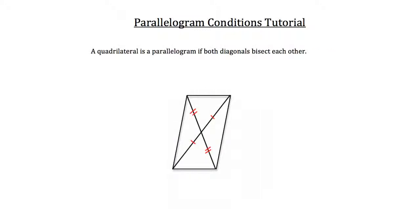Also, a quadrilateral is a parallelogram if both diagonals bisect each other. This doesn't mean that both diagonals are congruent to each other — it just means that where they intersect, they each cut that diagonal into two congruent parts.